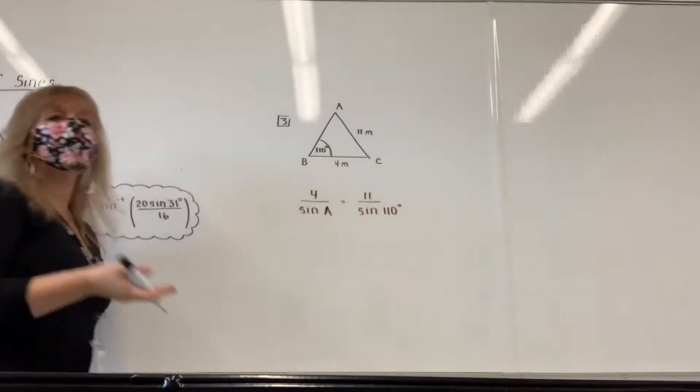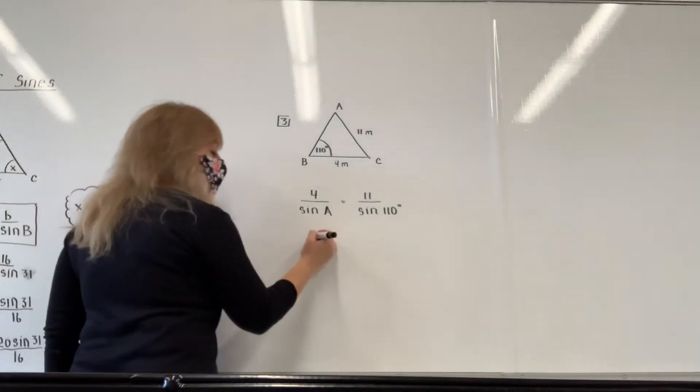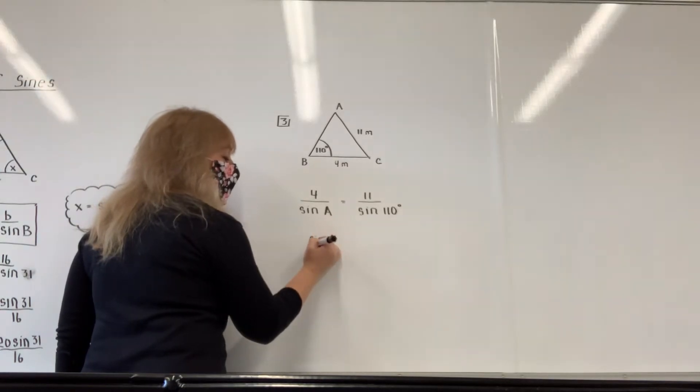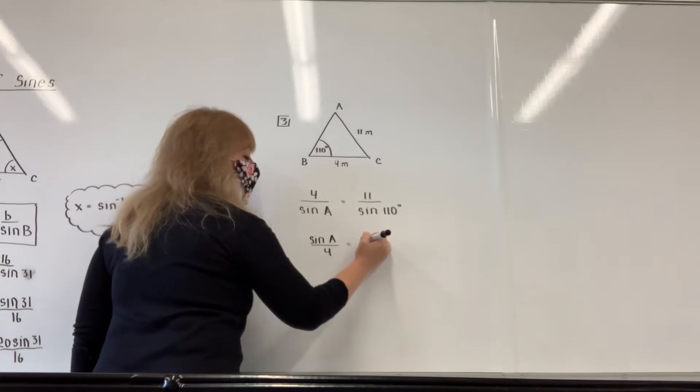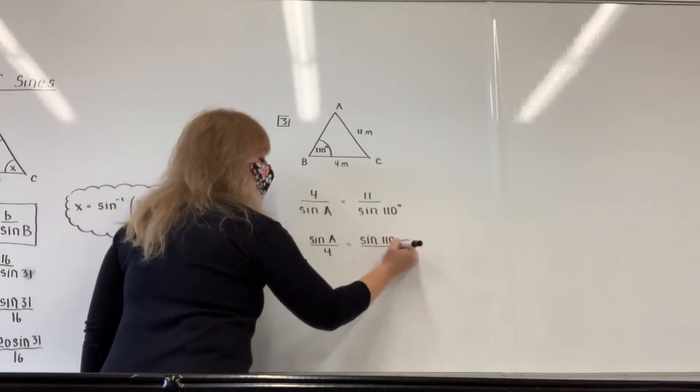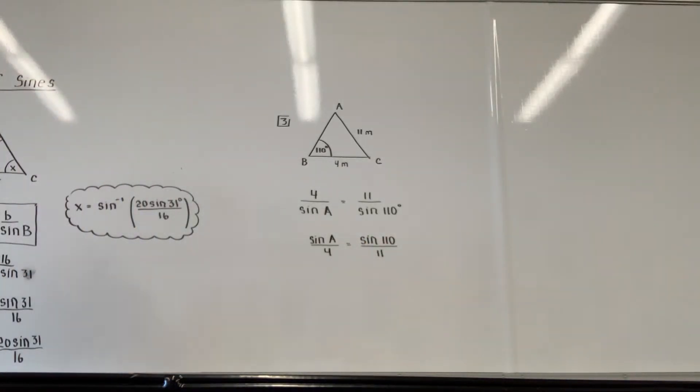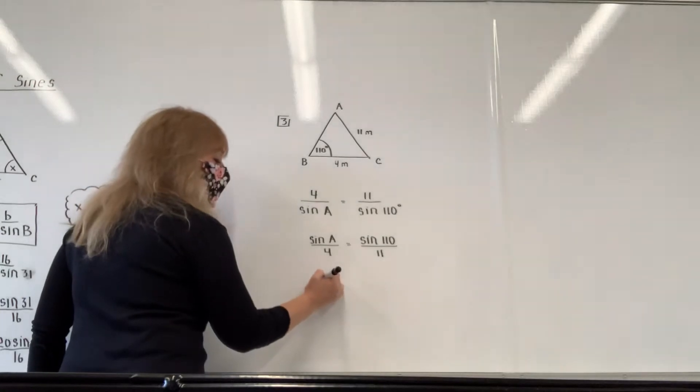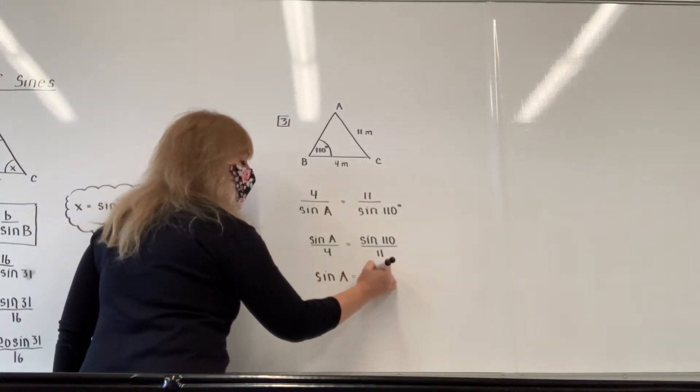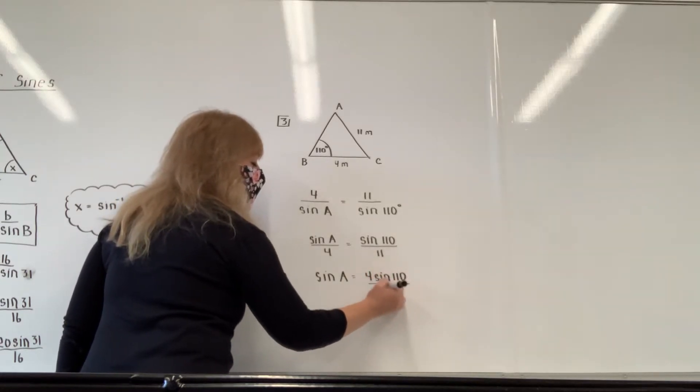And remember, those are not special angles, so who cares? But any time the unknown is in the denominator, I flip the proportion. So it is the sine of capital A over 4 is equal to the sine of 110 divided by 11. And I will multiply by 4 on both sides, which means I'm going to write down the sine of A is equal to 4 sine of 110 divided by 11.